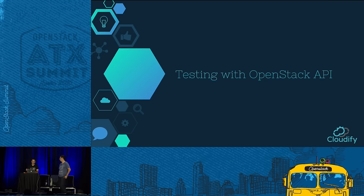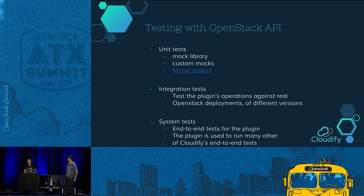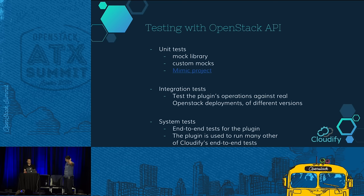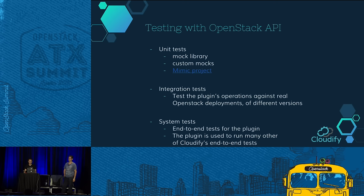Next section is about how we test our OpenStack plugin and against OpenStack APIs in general. We separate tests into three sections: unit tests, where you can use the standard mock library in Python or the Mimic project — a Rackspace project that mimics some OpenStack services giving you good mocks out of the box. Integration tests test the plugin's operation against a real OpenStack deployment, checking a specific operation like creating a server or security group. System tests check the plugin end-to-end — both creating a server, creating a security group, and connecting them — and we also use the OpenStack plugin to run most of Cloudify's end-to-end tests on the OpenStack environment.